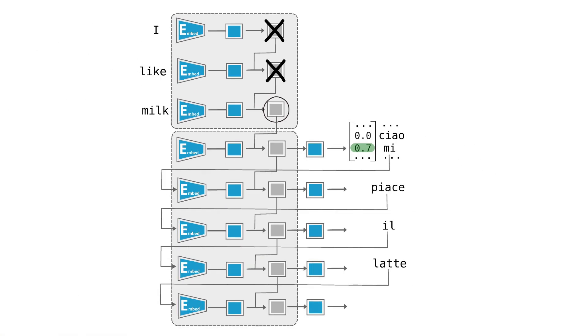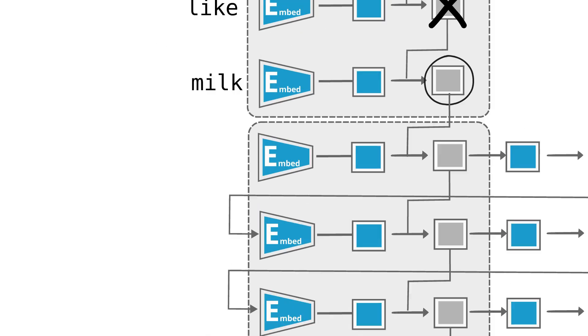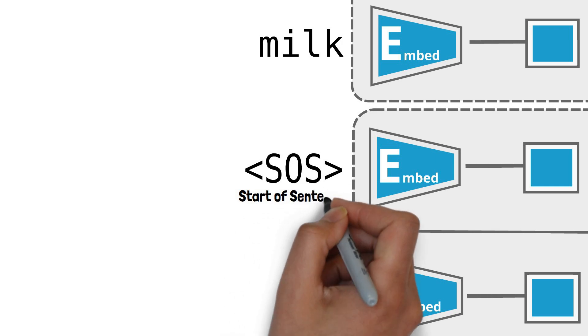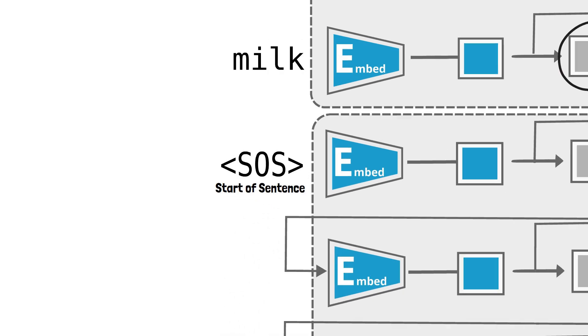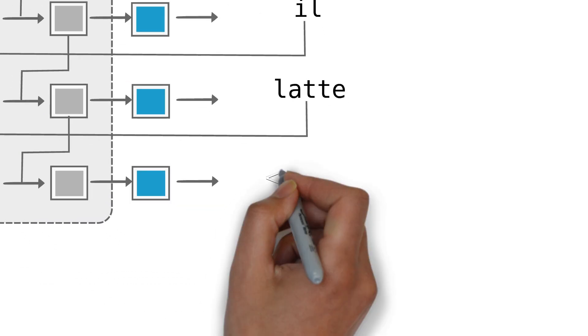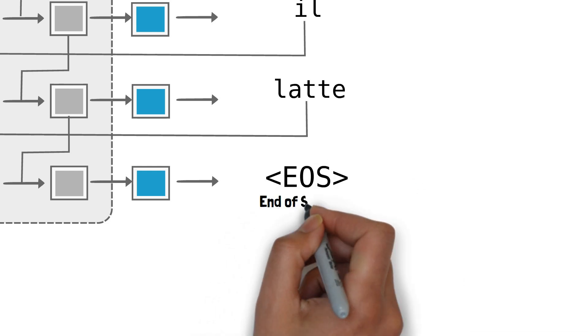The only difference with a regular language model is that we use a special SOS as the seed for the first step. We continue generating words until the model outputs another special token called EOS, end of sentence.